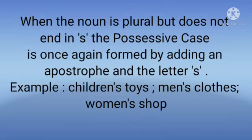When the noun is plural but does not end in S, the possessive case is once again formed by adding an apostrophe and the letter S. For example: children's toys, men's clothes, women's shop.